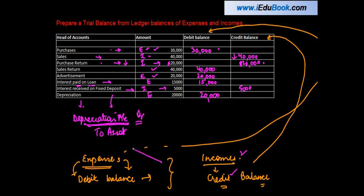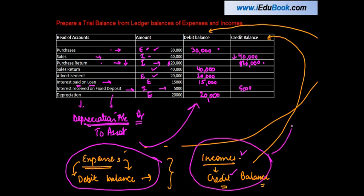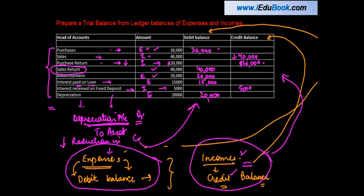The only thing you need to keep in mind is whether a particular account is an expense account, in which case it has a debit balance, or an income account, in which case it has a credit balance. Any reduction in an expense — which normally has a debit balance — is done by providing the opposite side, so a reduction in expense is a credit balance, while a reduction in income is a debit balance, like sales return. With this logic you can handle any number of cases, as long as you know what a particular account stands for.